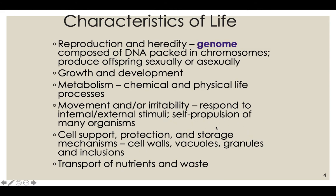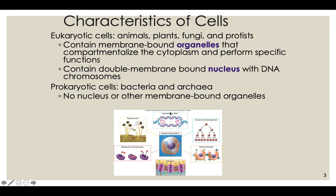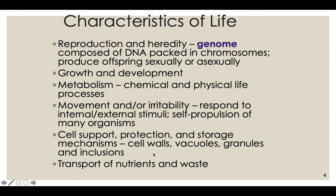All cells have some sort of cell protection — a cell wall, vacuoles for storage, or a cytoskeleton. All living cells have the ability to transport nutrients in to make more energy and transport waste products out. So you break down nutrients, get all the energy out, then get rid of the leftover waste. Endocytosis brings in large nutrients and macronutrients; exocytosis gets waste products out of your cells.